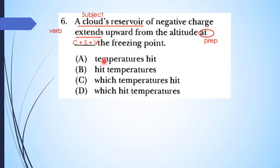Karena di sini kita memiliki pilihan seperti itu: which, heat, temperature. Tidak mungkin sebuah kalimat itu memiliki dua subjek atau dua predikat. Sehingga di sini perlu kita isi dengan konektor. Mana yang paling salah kira-kira? Yang pertama adalah pilihan A karena dia subjek predikat. Yang kedua, pilihan B, sama saja kebalik ya, heat temperature.